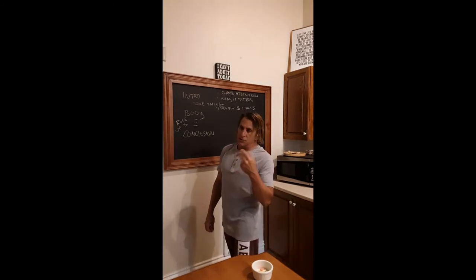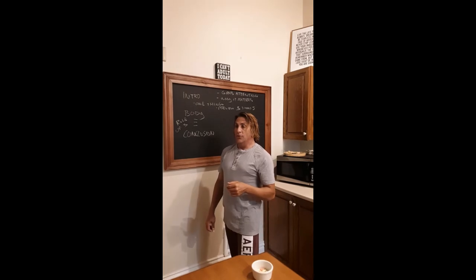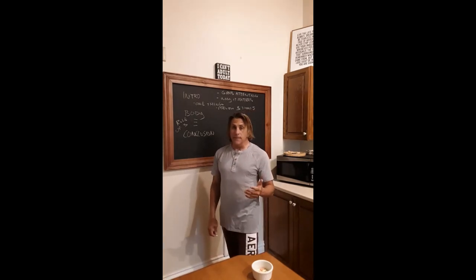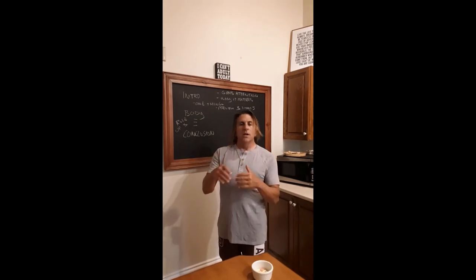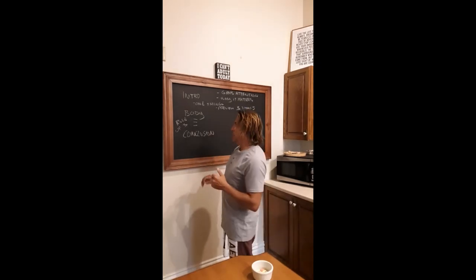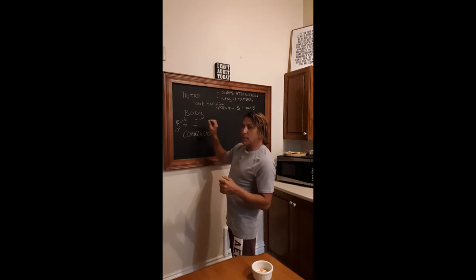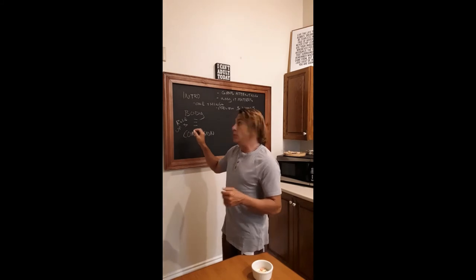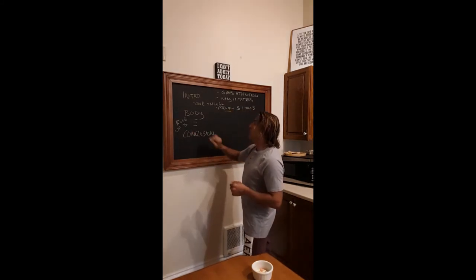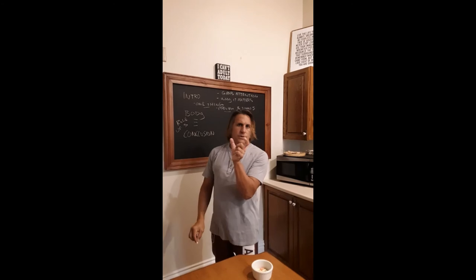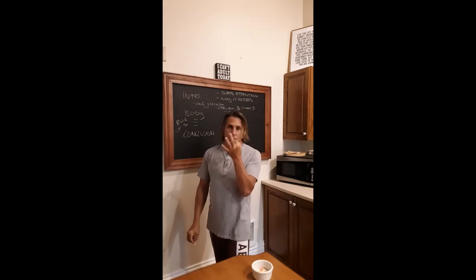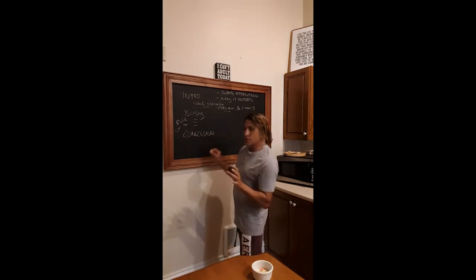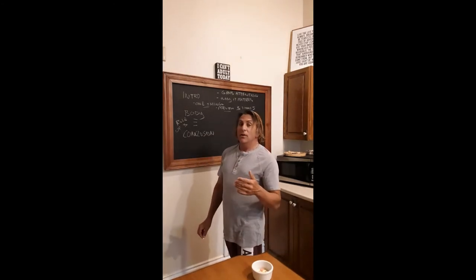In the body you talk about your three things. In between them you have transitions — you can say first, second, third; you can say initially, subsequently, and finally. Those are all key words you can use to transition between each of those three things. At each point you use the same language and vocabulary that you used in the preview and in the one thing — call them buzzwords.